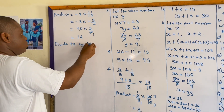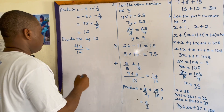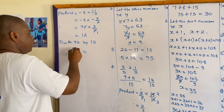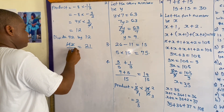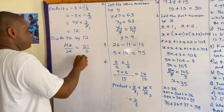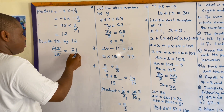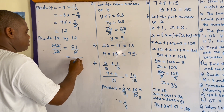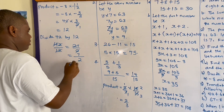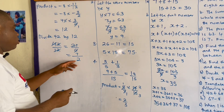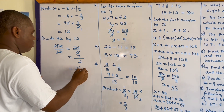The equation says divide forty-two by the product, which is twelve. So we have forty-two divided by twelve. We can simplify: dividing both by two gives twenty-one over six, then dividing by three gives seven over two. Our answer is seven over two, which simplifies to three and one-half.